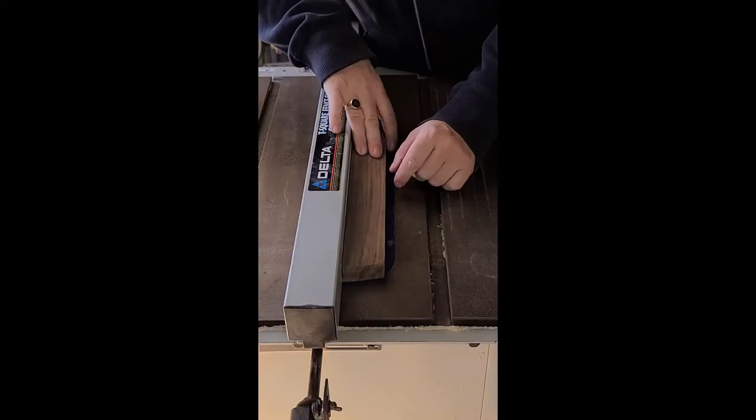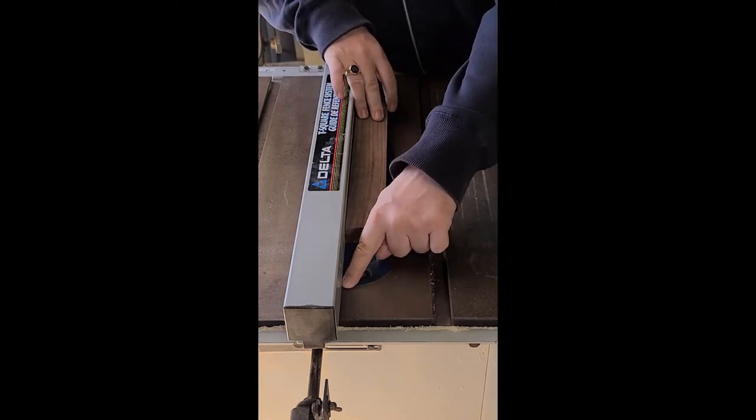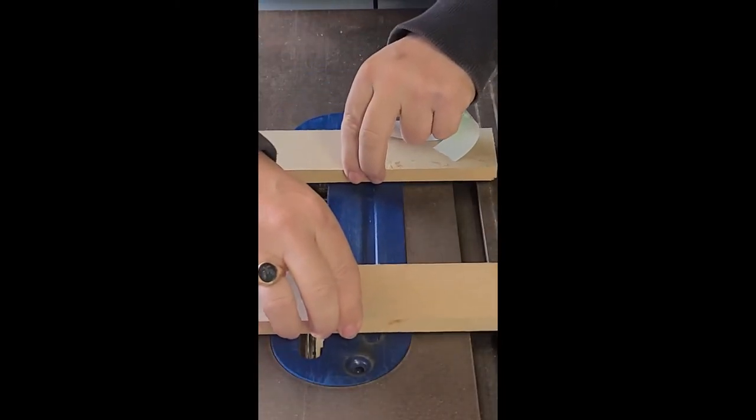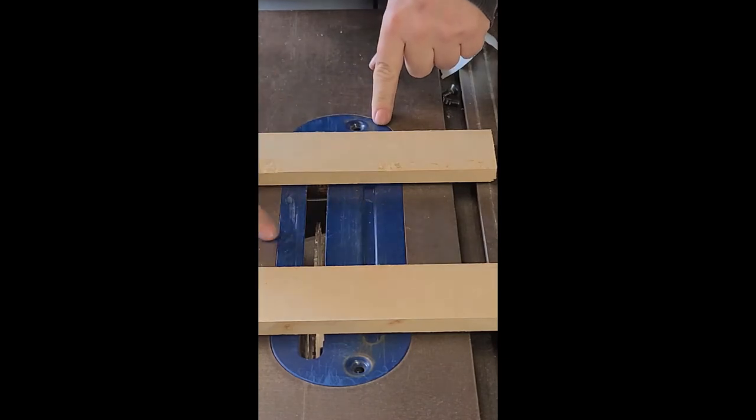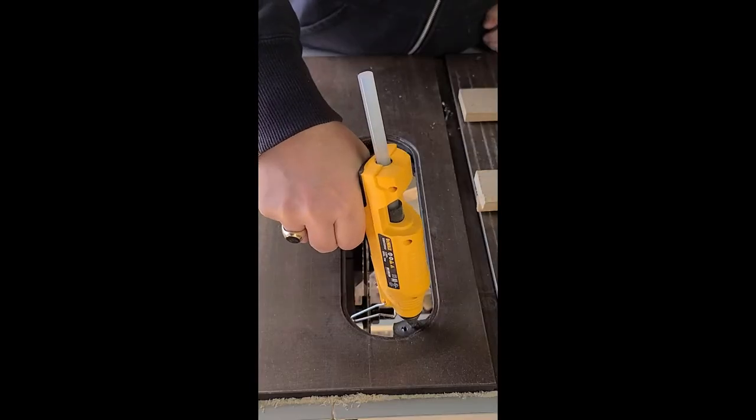My insert plate rests just slightly below the top of the table so the wood catches on the lip. I double side tape a couple pieces of MDF across the insert which rests it flush with the tabletop.